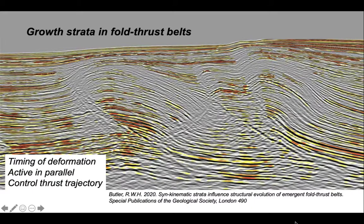So a brief look at growth strata in fold thrust belts. We can use them to deduce the timing of deformation. And in doing that, we find that folds tend to be active in parallel, though they may, on a large scale, form in a general sequence. We've also seen that the depositional processes can control the thrust trajectory and may even kill off thrust structures, forcing deformation to migrate to parts of a basin area where there's less sedimentation.